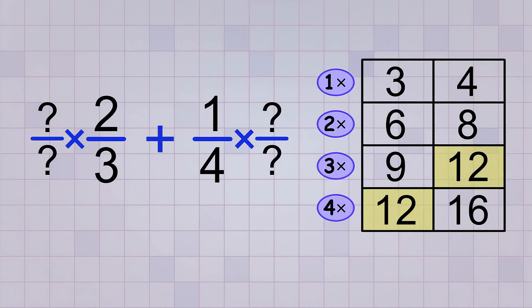For example, if you multiplied by 4 to get the common multiple for the first unlike fraction, then you'll use 4 over 4 as your whole fraction. And if you multiplied by 3 to get the common multiple for the second unlike fraction, then you'll use 3 over 3 as your whole fraction for it.